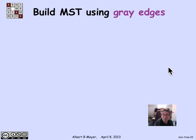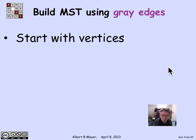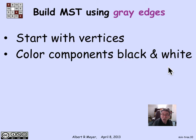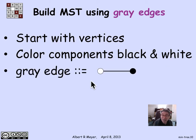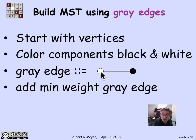The idea is to build the minimum weight spanning tree using gray edges. Starting with the vertices, we begin building a tree. At any point we have a set of edges with no cycles — a forest — that are not yet fully connected. At each stage we look at the connected components of the current graph, color them black or white, and then look at the gray edges. A gray edge is defined as an edge where one endpoint is black and the other is white. At each stage, we pick the minimum weight gray edge.